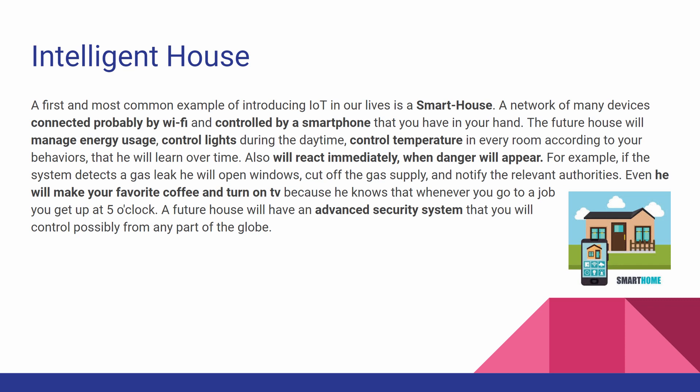The first and most common example of introducing IoT in our lives is a smart house. A network of many devices connected probably by Wi-Fi and controlled by a smartphone that you have in your hand. The future house will manage energy usage, control lights during the daytime, and control temperature in every room according to your behaviors that it will learn over time. It will also react immediately when danger appears.